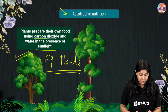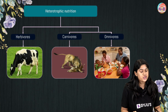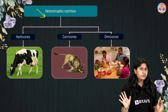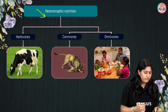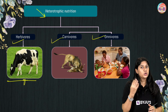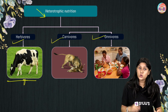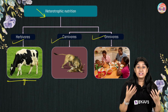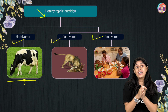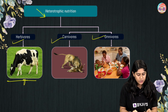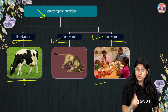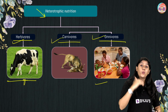Opposite to that, we have the heterotrophic mode of nutrition. Heterotrophic organisms depend upon others for their food — they cannot make their own food. In this category we have herbivores, carnivores, and omnivores. Herbivores eat only grass or plants; examples are cow and goat. Carnivores only consume the meat of other animals; examples are lion, tiger, and leopard. Omnivores consume both plants and meat — in this category, we humans are the biggest example. We depend upon others for our food and that's why we have a heterotrophic mode of nutrition.